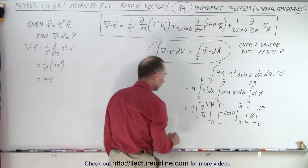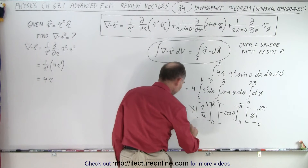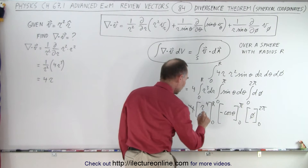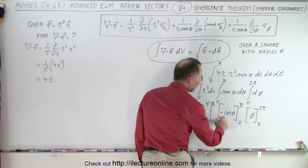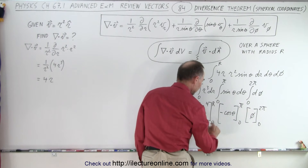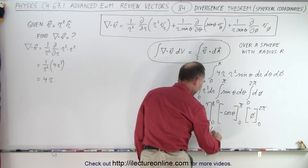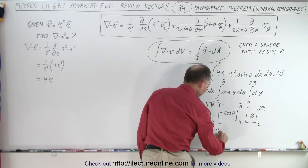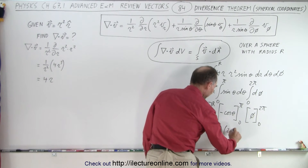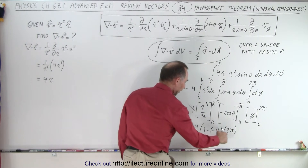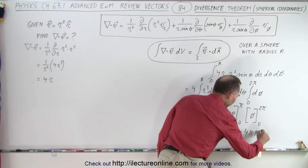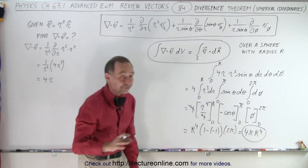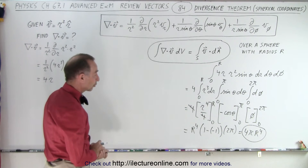The 4 cancels with the 4, so this equals r to the fourth. For the theta integral: plugging in the upper limit gives negative cosine(π) = +1, minus negative cosine(0) = −(−1) = +1, giving 2. Times 2π gives 4π. So the result is 4πr⁴, which is the integral of the divergence over the volume of the sphere with radius r.